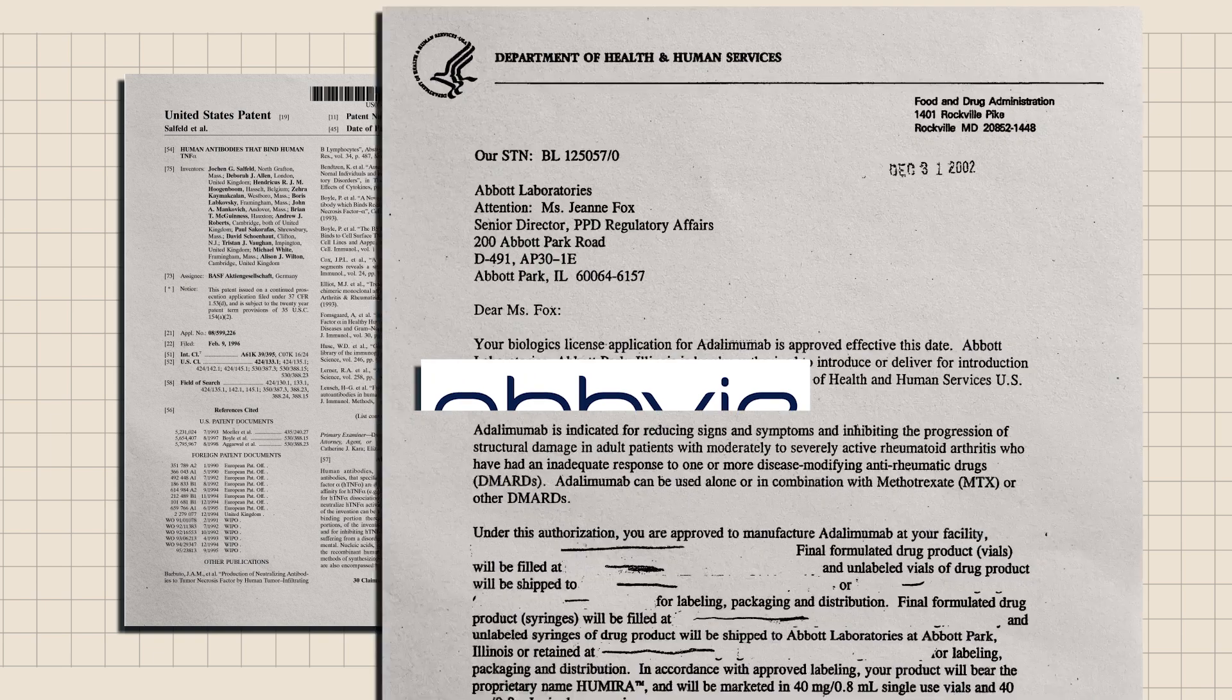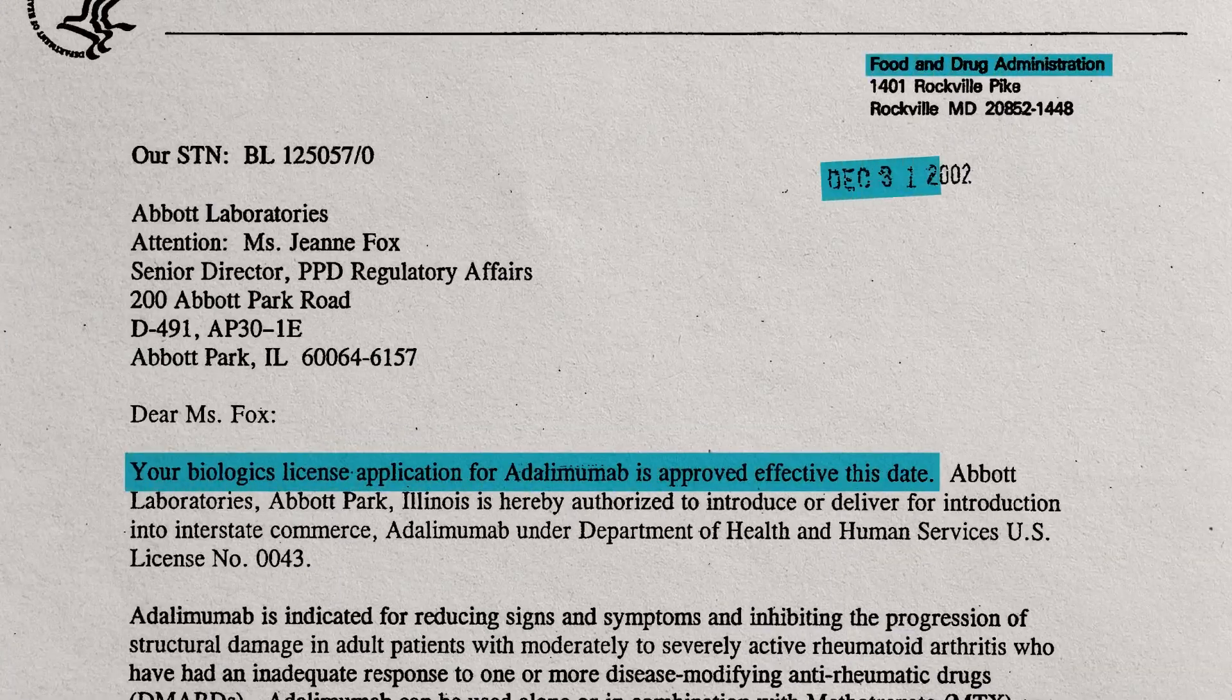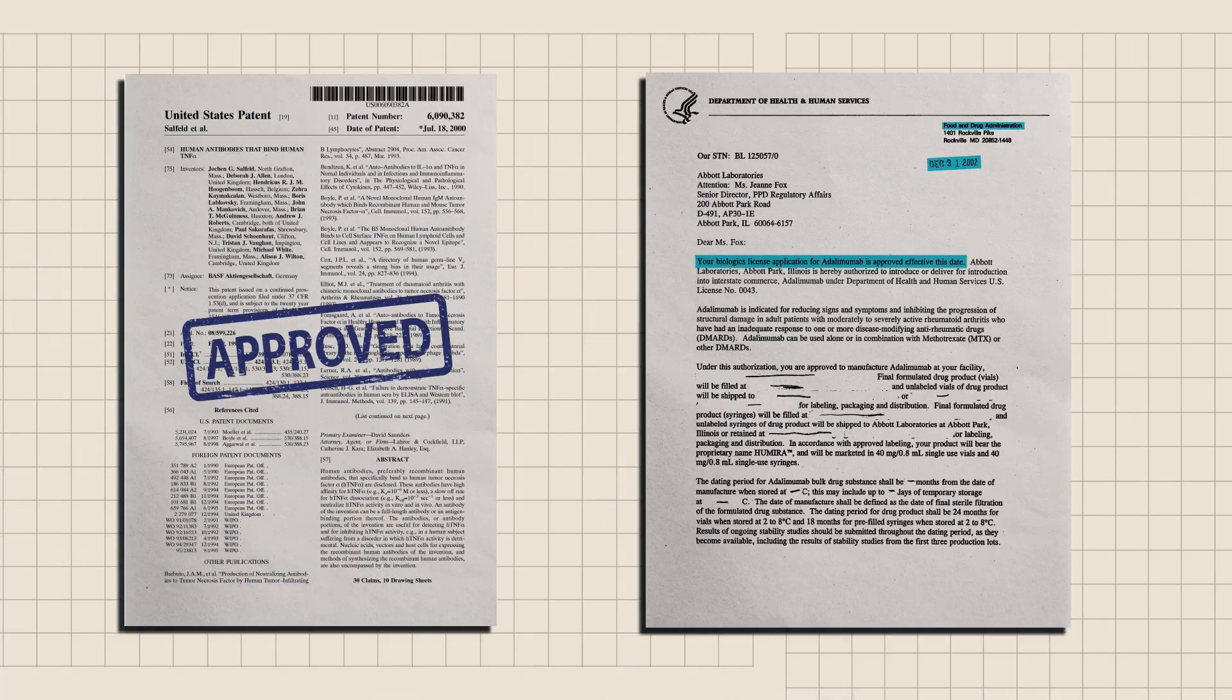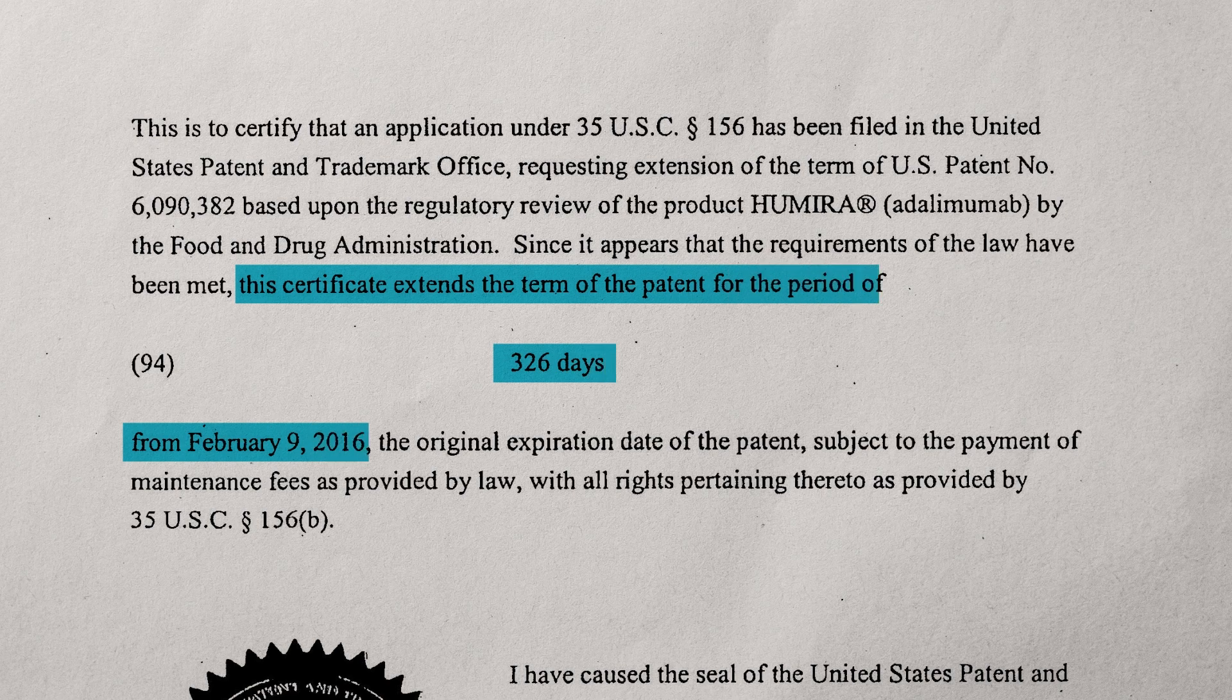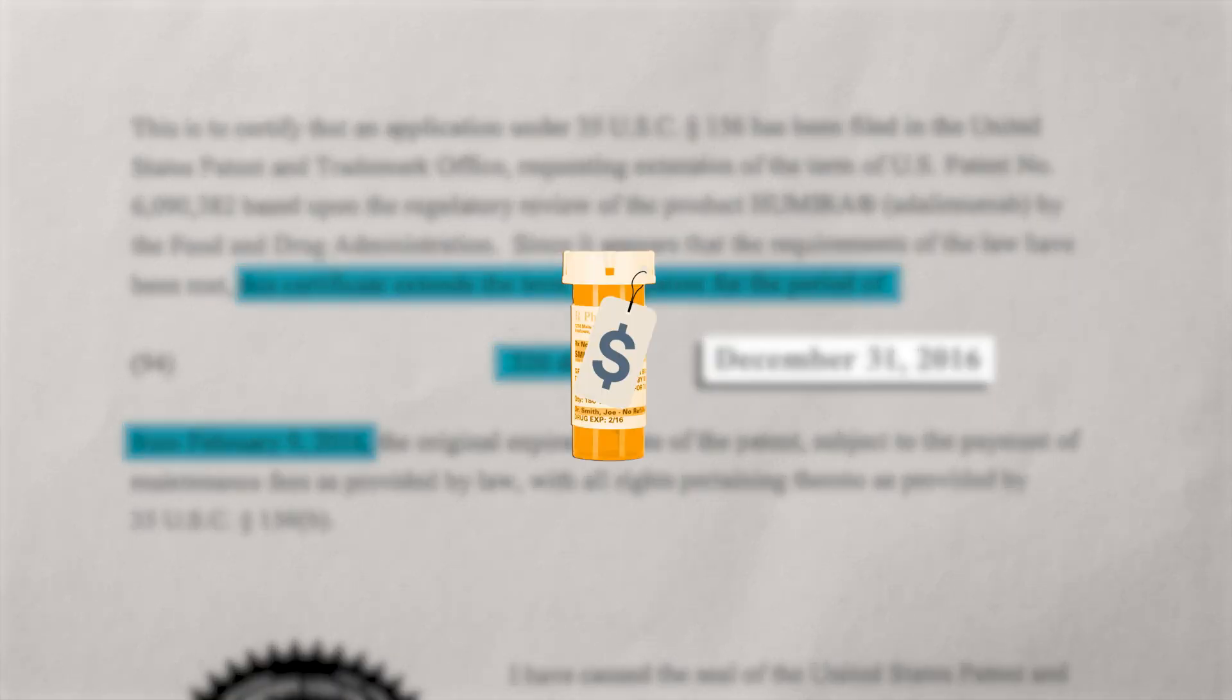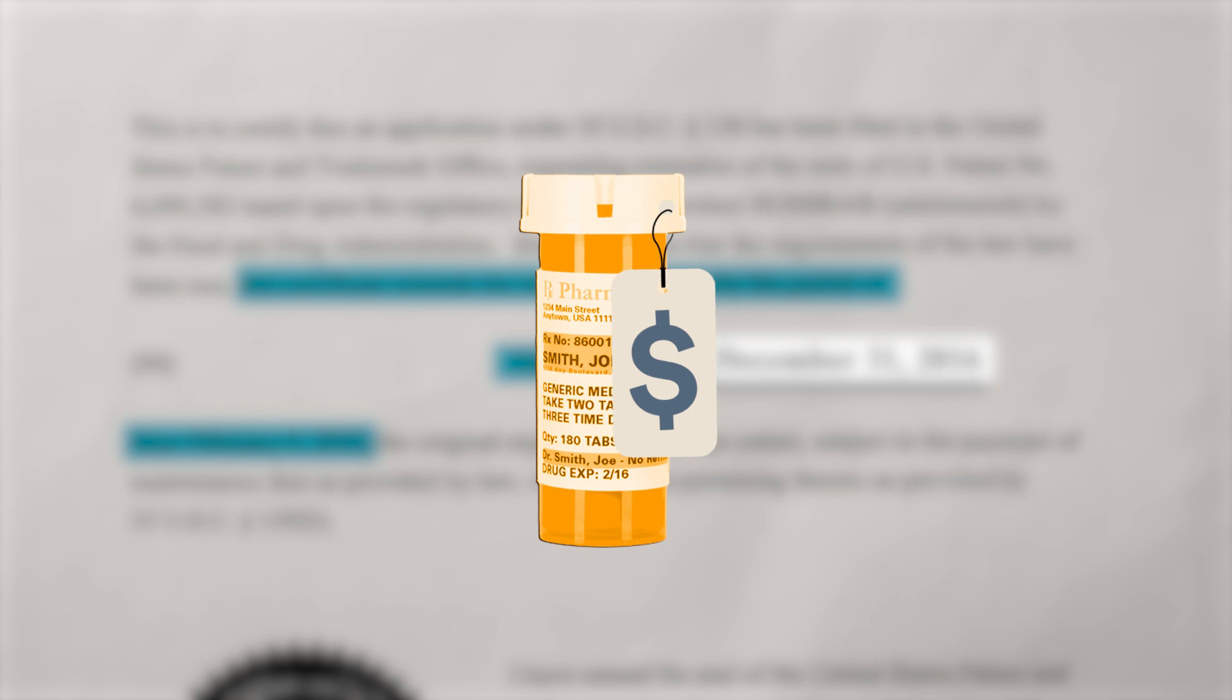Humira's manufacturer AbbVie first obtained FDA approval for the drug in 2002, and its initial patents were set to expire in 2016. And those patents did expire in 2016. But prices did not go down for patients in 2016.